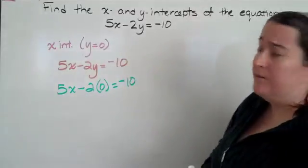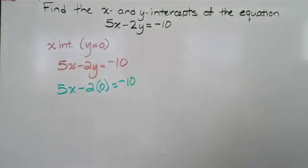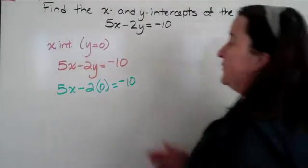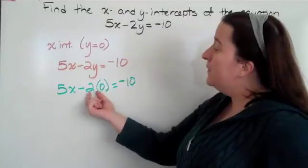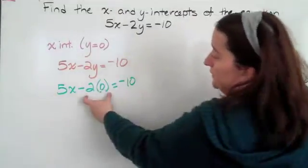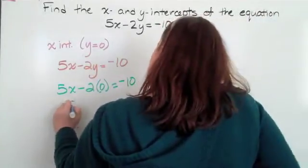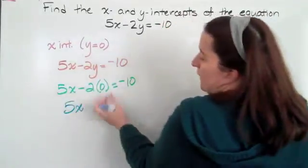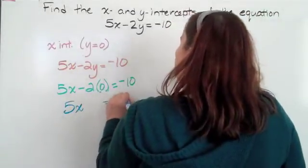Now I just have to solve this equation to get my x by itself. Solving equations, you always do parentheses first. And in this case, essentially my parentheses is a 2 and my 0, and I'm going to multiply it by the negative 2. Anything times 0 is 0, so I have 5x minus 0. I'm not going to write it down because it's just a 0. Equals negative 10.